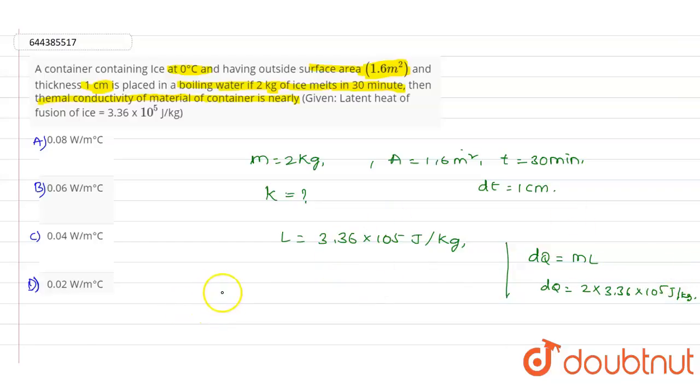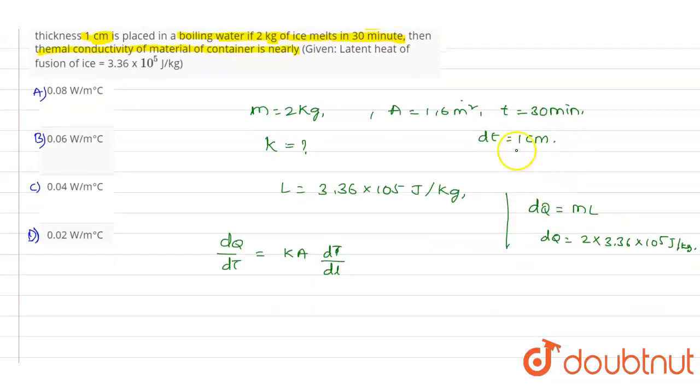So dQ divided by dt will be equal to k A into dT divided by dL. So here dL is the value of the thickness. So dL, and here capital T is nothing but the value of the temperature.